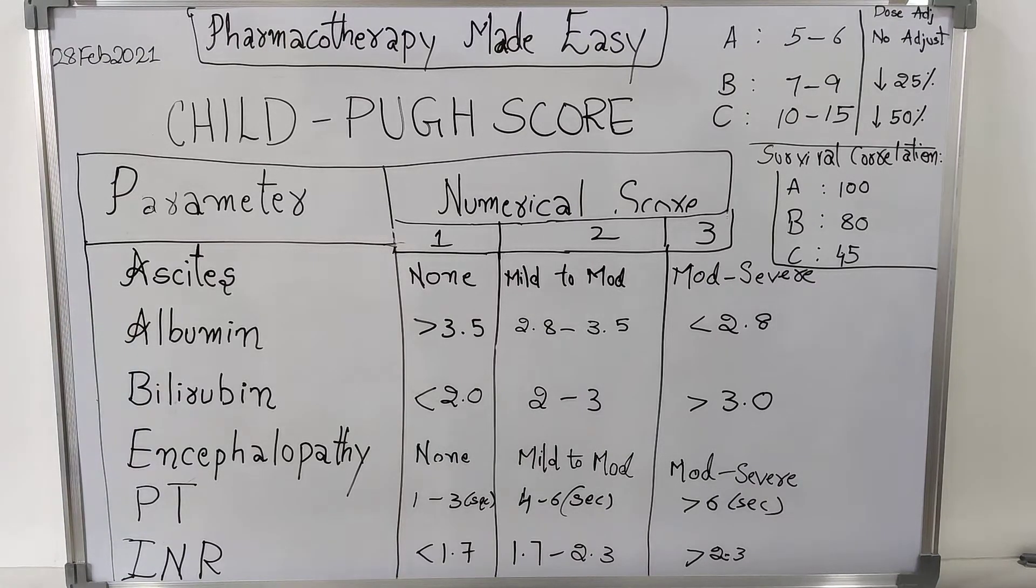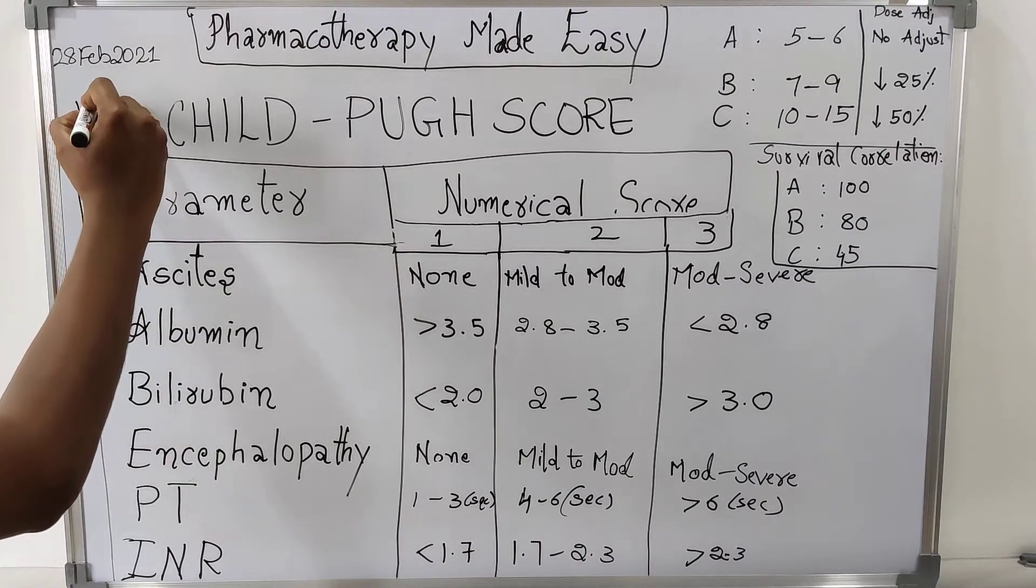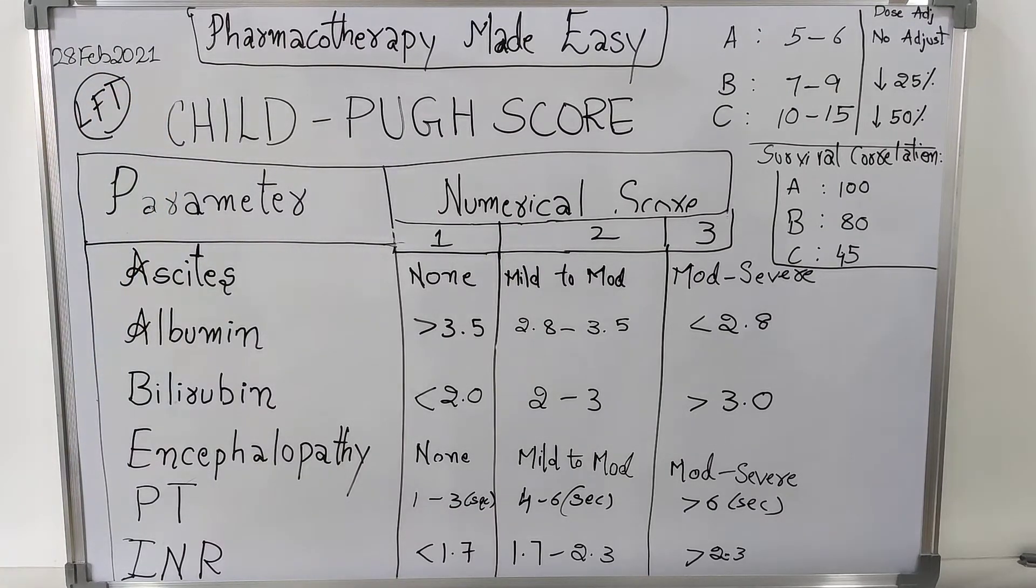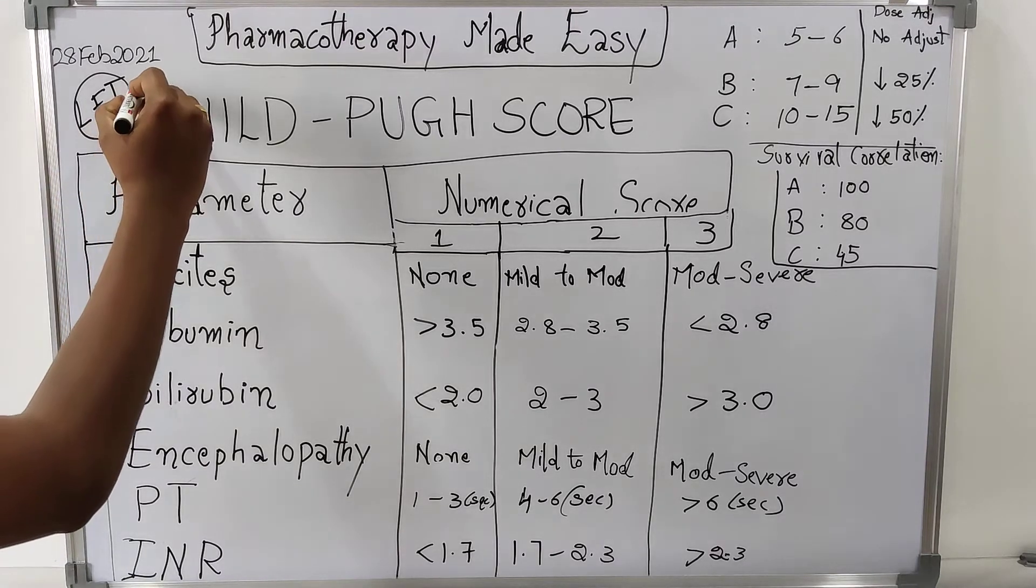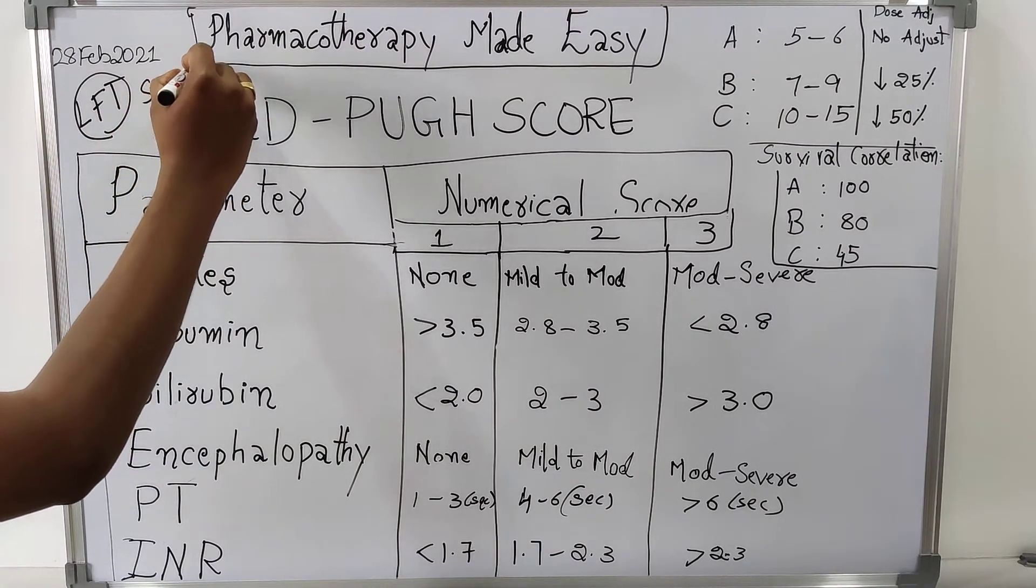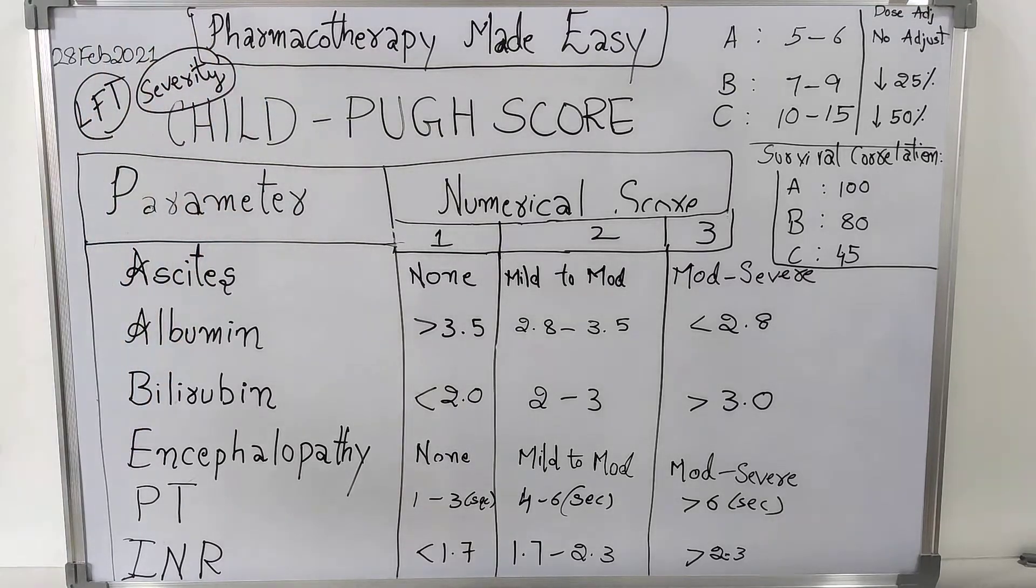What is Child Pugh Score? Child Pugh Score is just like Liver Function Test. It is not a direct liver function test, but it will be useful to assess the severity of liver disease.